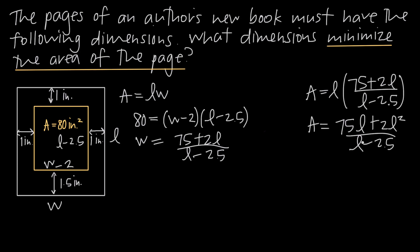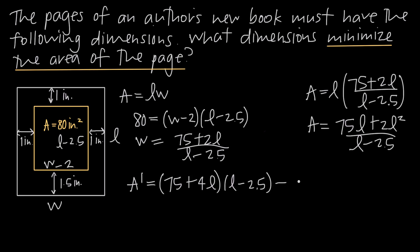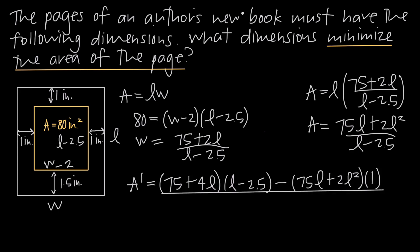In order to take the derivative of the right-hand side, we're going to need to use the quotient rule. So A prime equals: first, the derivative of the numerator — the derivative of 75l is 75, and the derivative of 2l squared is 4l — multiplied by the denominator (l minus 2.5), minus the numerator (75l plus 2l squared) multiplied by the derivative of the denominator, which is 1, all divided by the denominator squared, (l minus 2.5) squared.